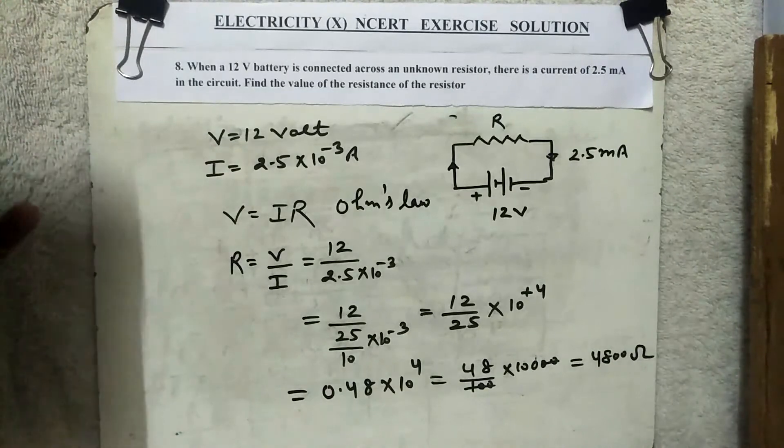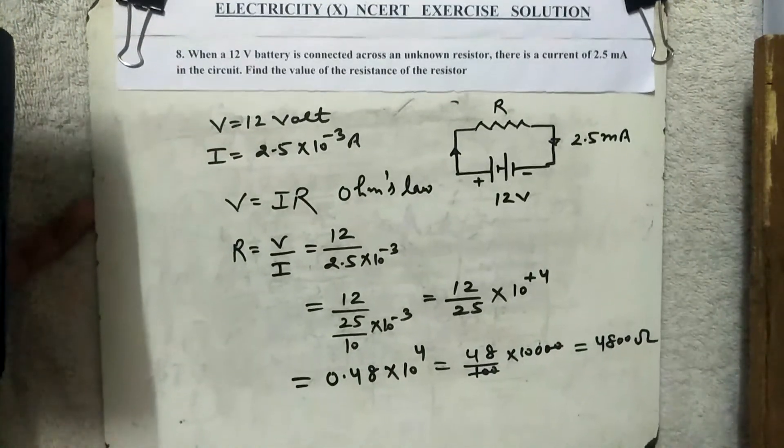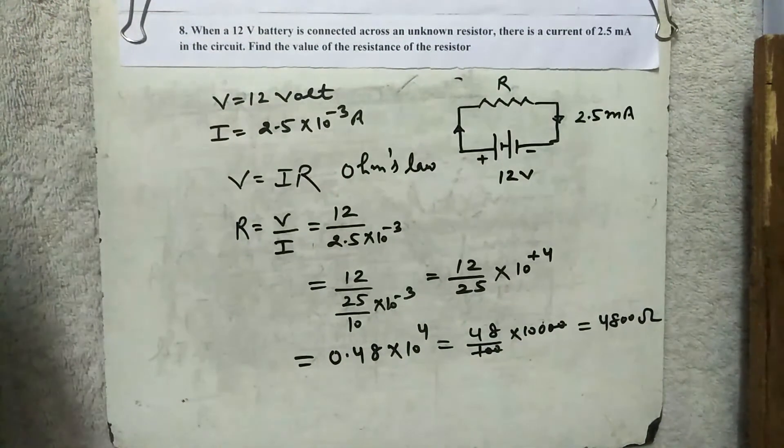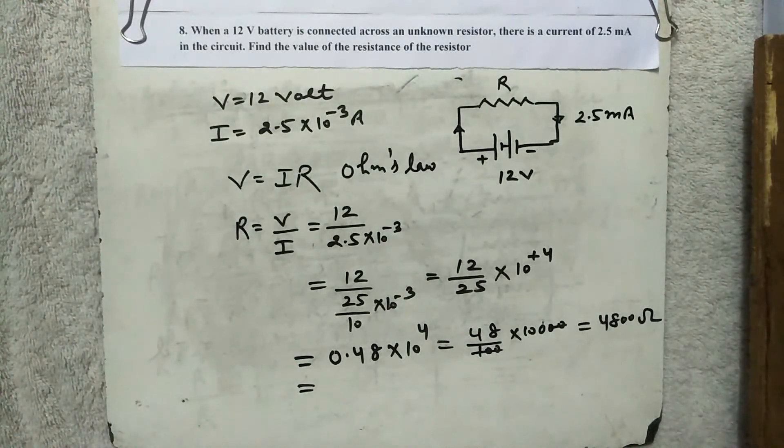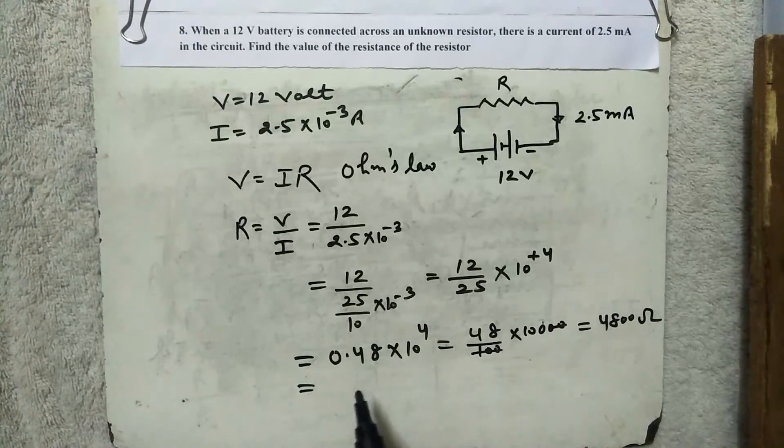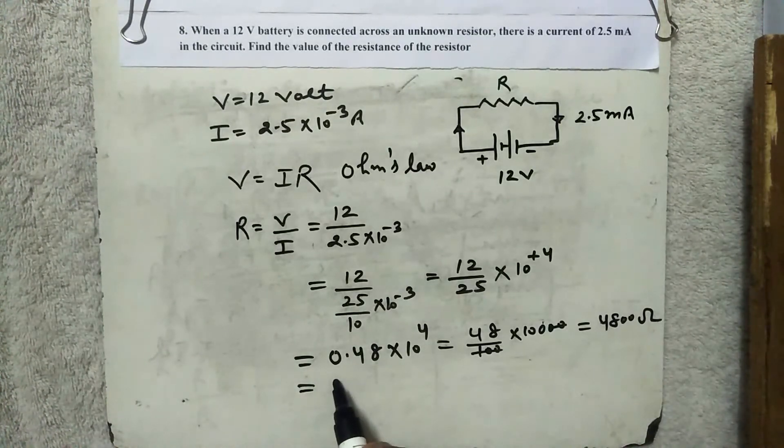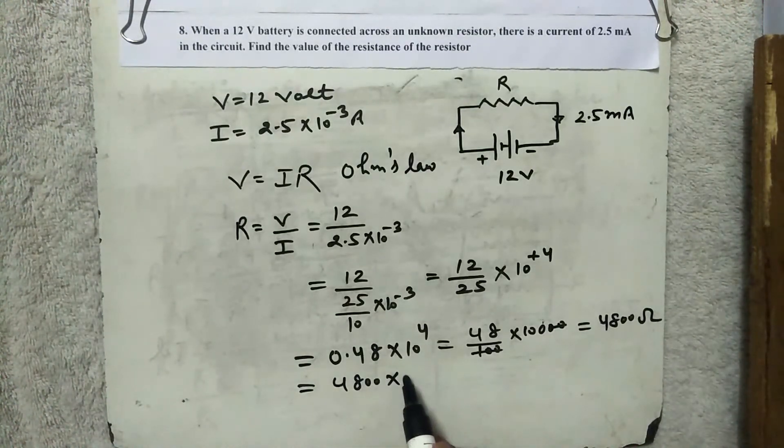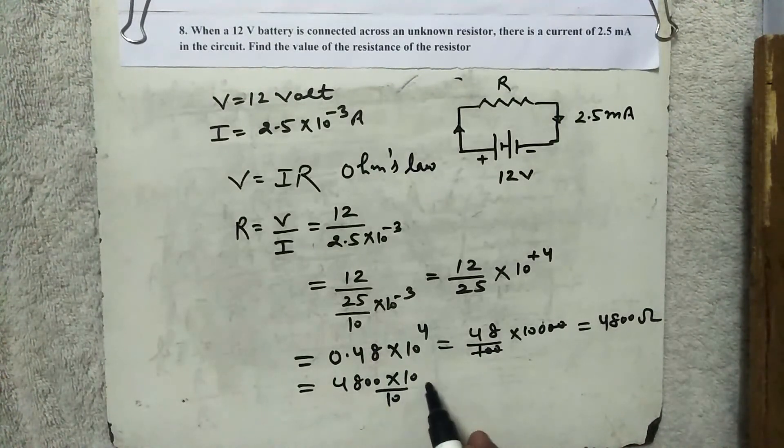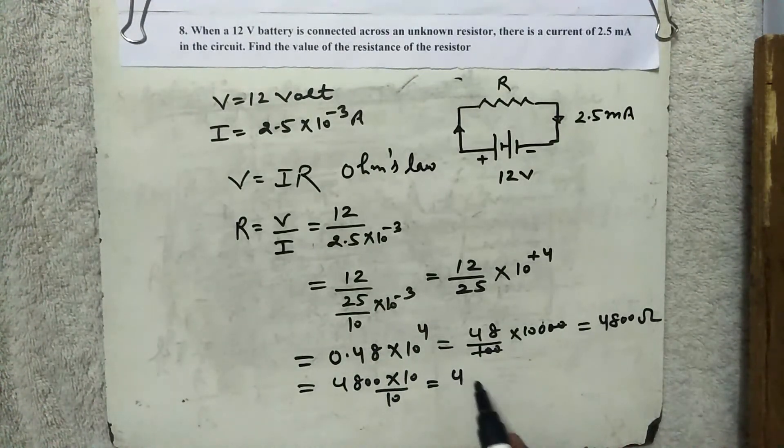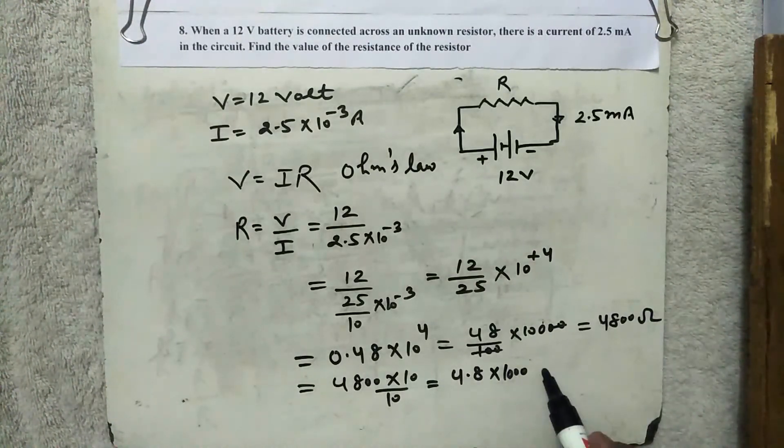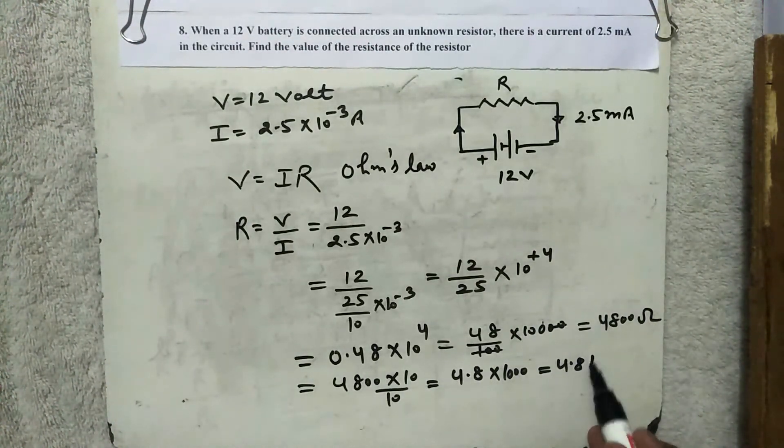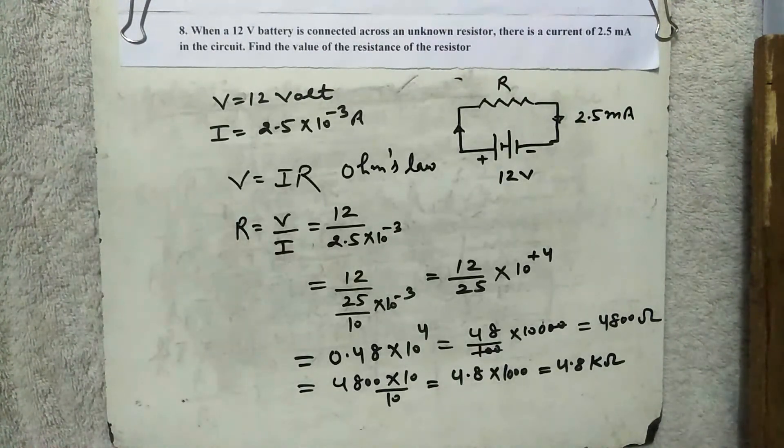This is also correct. If you want to match with the book, then what do we have to do? Now what do we have to do? Our answer in order of magnitude, if we take it out, it should be between 0 to 9. So what do we have to do? We will do 4800 multiply by 10 divide by 10. So how much will this be?